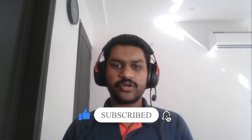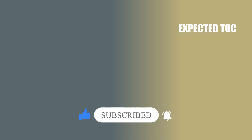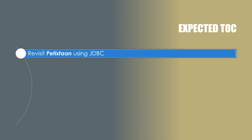Let's check what we are going to cover in our expected table of contents. First of all, we will be revisiting our Patistan application which we made in our JDBC series. We will see how we were making usage of JDBC and discuss the disadvantages of directly using JDBC. This Patistan application is what we are going to enhance in our Hibernate series.